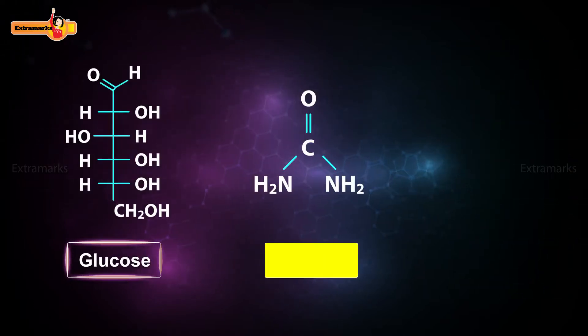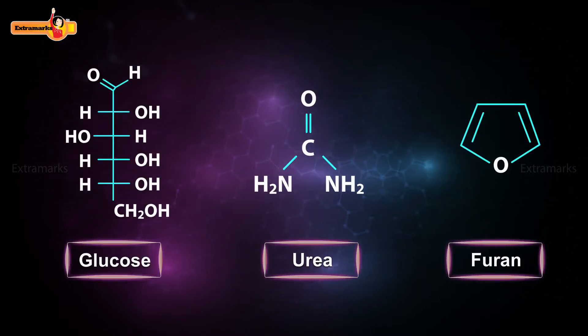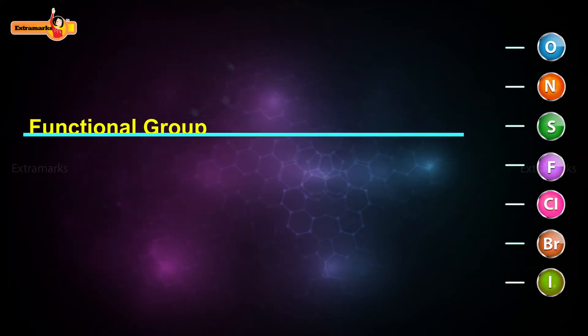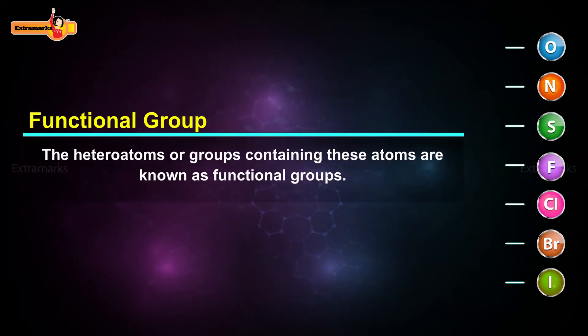Compounds like glucose, urea, furin are examples of compounds having heteroatoms. The heteroatoms or groups containing these atoms are known as functional groups.